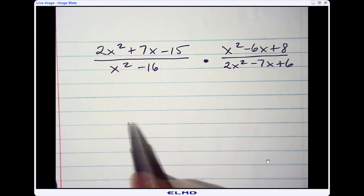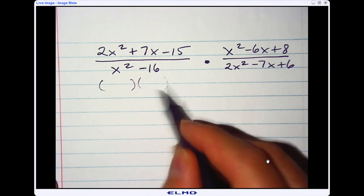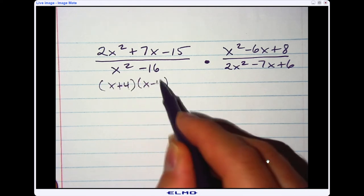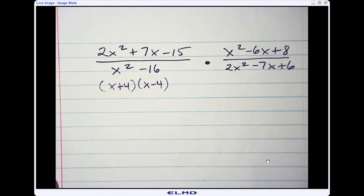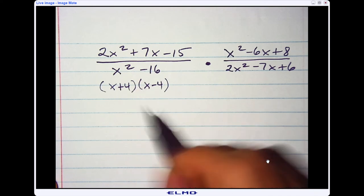So what I would do first is I would go ahead and factor each of these into binomials. Now, when you do these types of things, they will not always be factorable, but this one is set up just to show you a way of rewriting. So this one is obviously difference in squares, x plus 4, x minus 4.